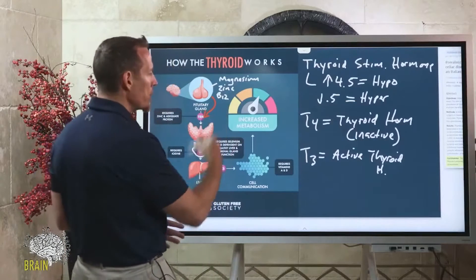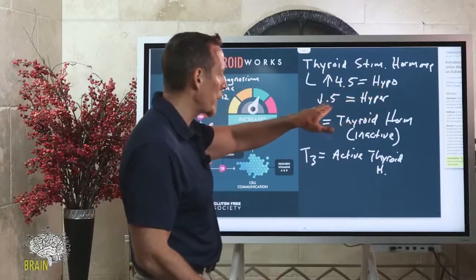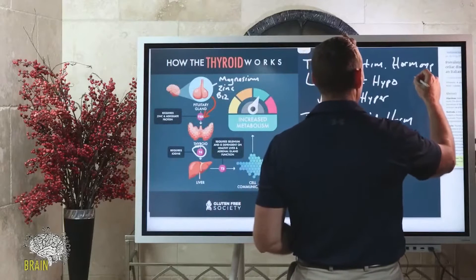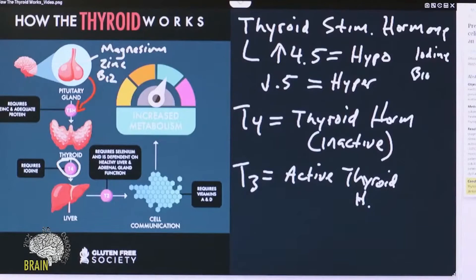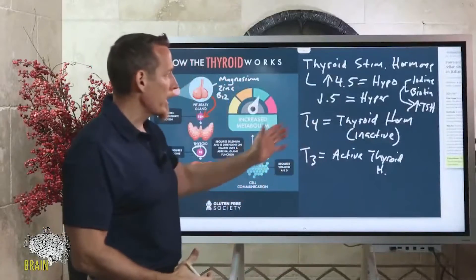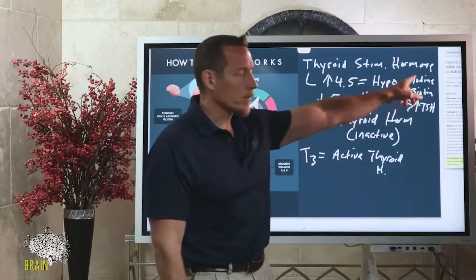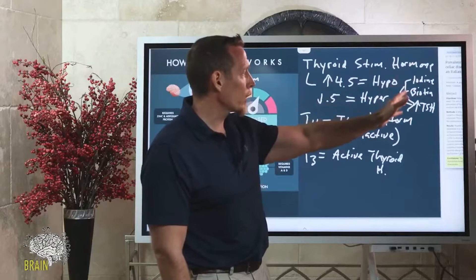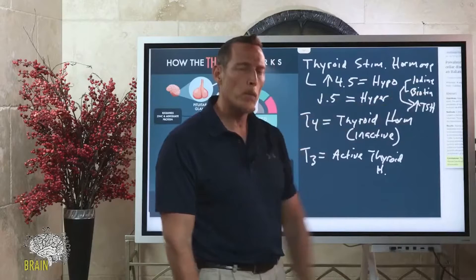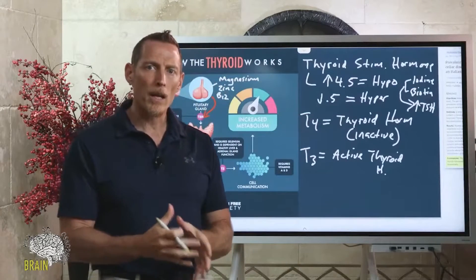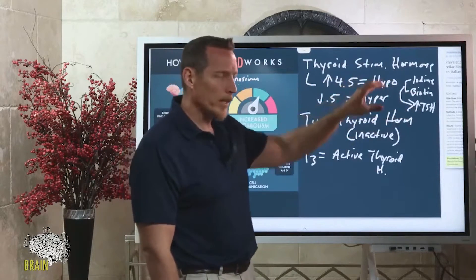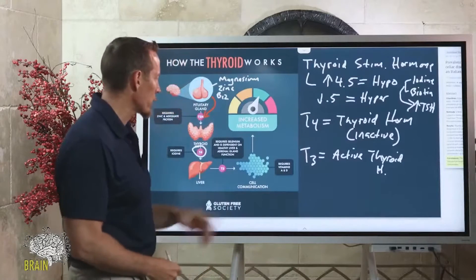TSH can be artificially elevated. Two nutrients can impact this: iodine and biotin. If you're supplementing with large amounts of either, they can increase your TSH artificially. Your doctor might see a TSH of 18 or 20 and want to put you on medicine right away. If you're getting bloodwork done, discontinue iodine and biotin for at least a solid week before your TSH evaluation to avoid artificially inflated levels.